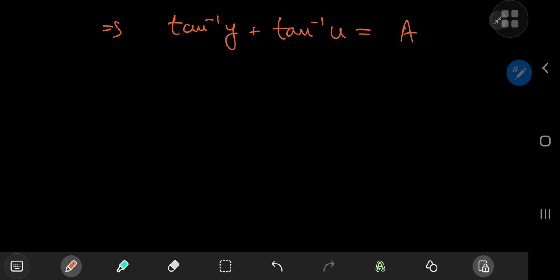This is a nice equation because we can just add up two inverse tangents using basic trigonometry. So this implies that on the left-hand side, we have the inverse tangent of the sum of the two arguments in the numerator, and one minus the product of the arguments in the denominator. And this equals a.